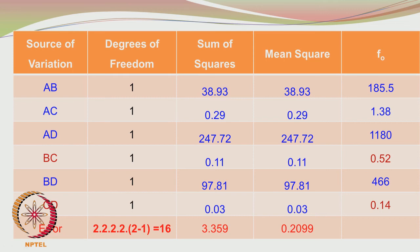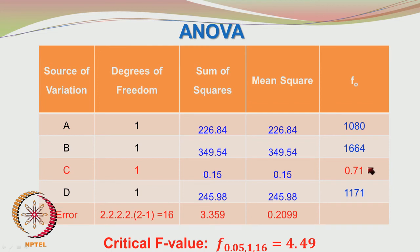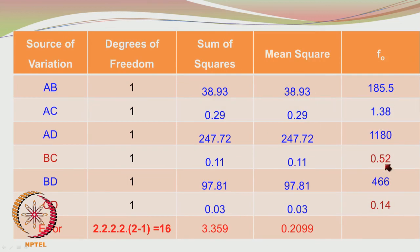Any binary interaction associated with C is also lying in the acceptance region. Coming back: C has an F value of 0.71, lying in the acceptance region. All other F values listed here are lying in the rejection region. When you look again, the binary interactions involving C — namely BC and CD — have pretty low F values lying in the acceptance region. The critical F value is 4.49. Even AC has a low F value lying in the acceptance region, meaning you can accept the null hypothesis that the binary interaction between A and C is negligible. Any binary or even ternary interaction with C becomes negligible — BC is negligible, CD is negligible — but other binary interactions are significant.